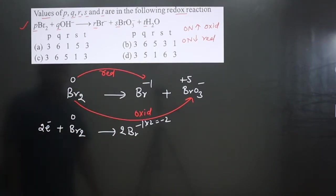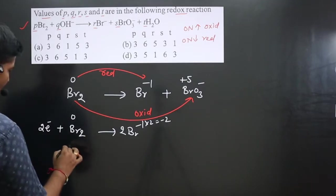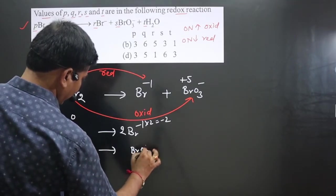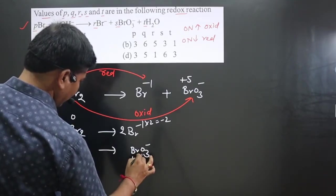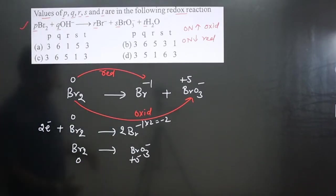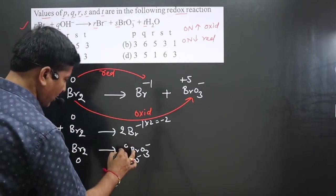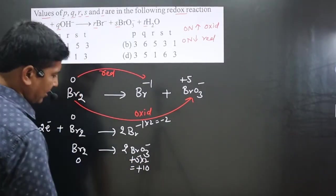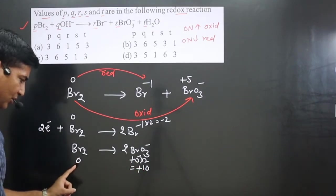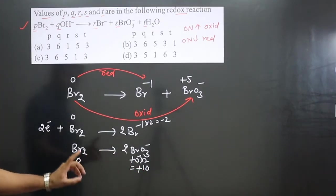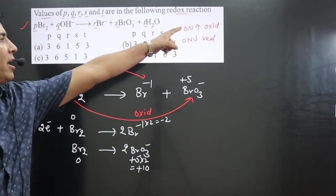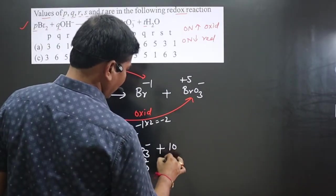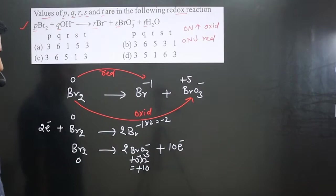Second half-equation: Br₂ → BrO₃⁻. Balance atoms: 2Br on left, multiply BrO₃⁻ by 2 on the right. Each Br is +5, so 2 Br = +10 total. The difference in oxidation number is 10 − 0 = 10. This is an oxidation reaction — increase in oxidation number — so we add 10 electrons on the right side: Br₂ → 2BrO₃⁻ + 10e⁻.